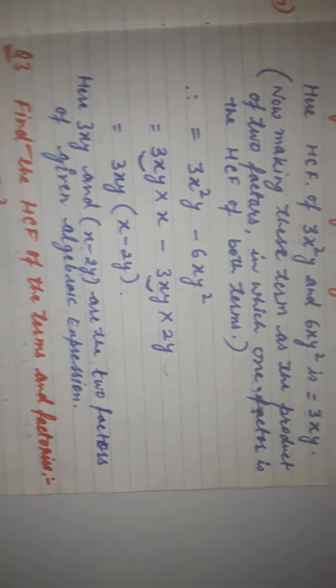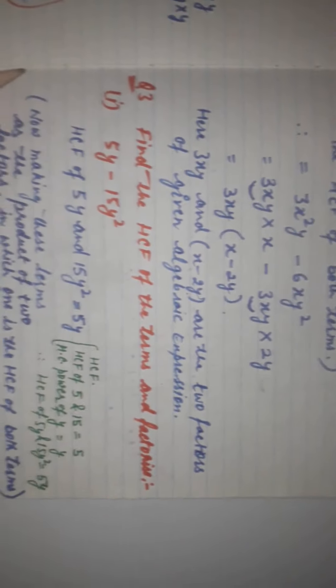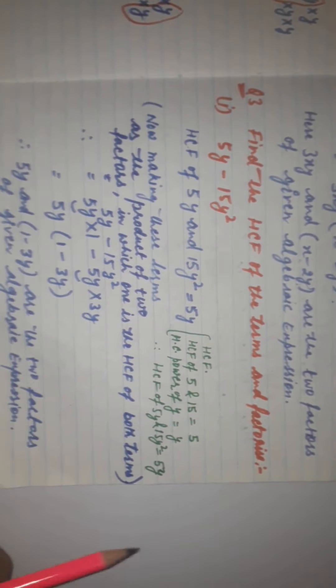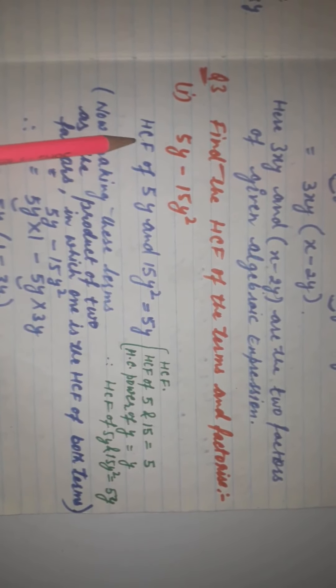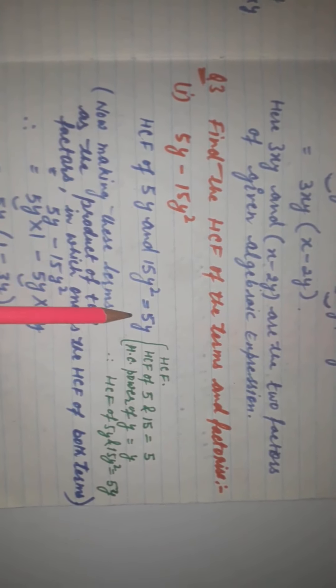Now for question number 3 of worksheet 5: find the HCF of the terms and then factorize. The first algebraic expression given is 5y minus 15y². Firstly, we will find the HCF of these two terms, 5y and 15y².